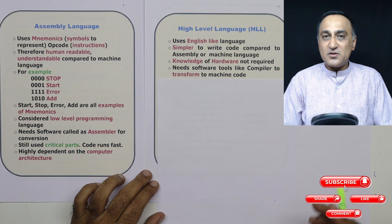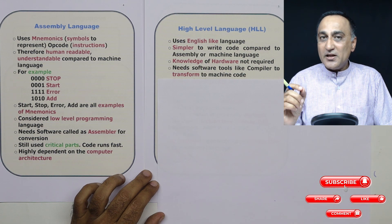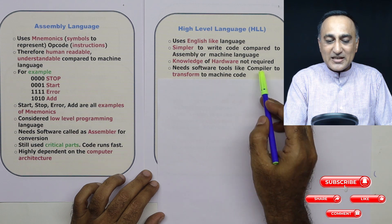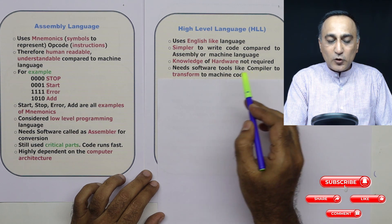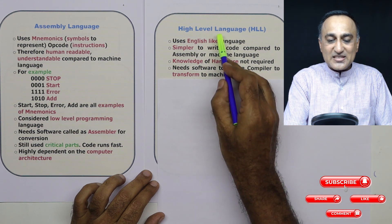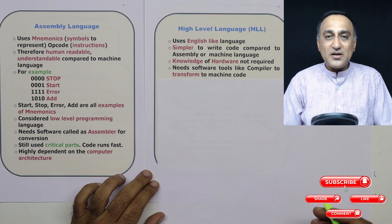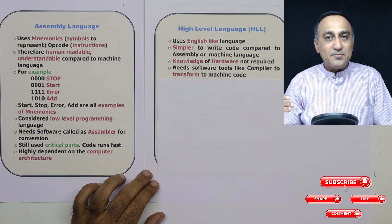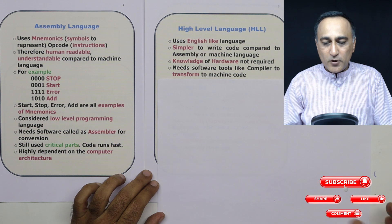The high level language makes absolutely no sense to the computer, so it needs a software called a compiler to convert this high level language into something called machine level language, also known in technical terms as the object code.